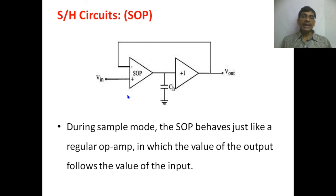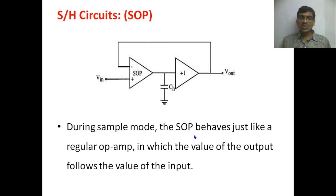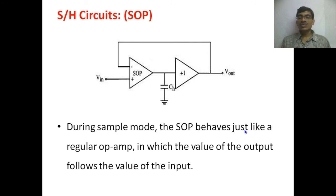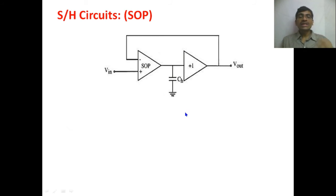The sample and hold circuit using a switched op-amp (SOP) has feedback and applies V_in at the input, with CH as the holding capacitor and an output buffer. During sample mode, the SOP behaves just like a regular op-amp — the output value equals the input value, and that value is also stored in the capacitor.